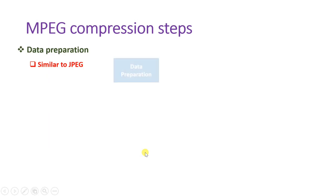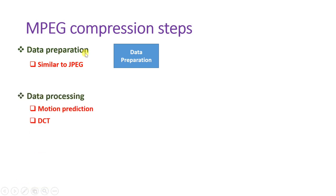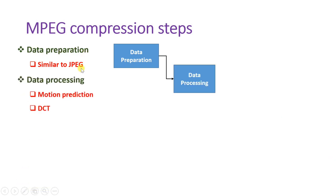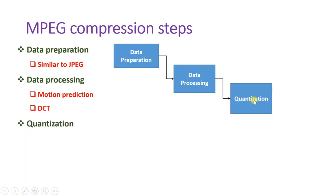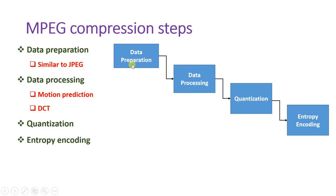Now let us see the MPEG compression steps. The first step is data preparation, then data processing, then quantization, and at the end entropy coding. I will explain these complete compression steps one by one, so it will be clear how we provide compression to a given video.